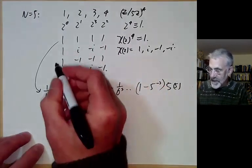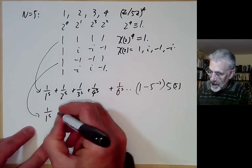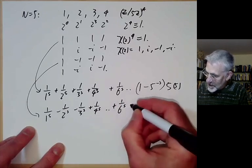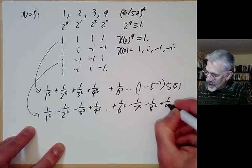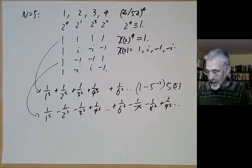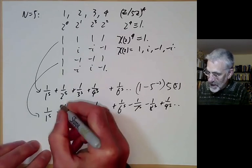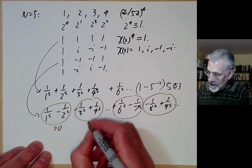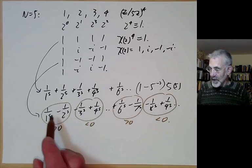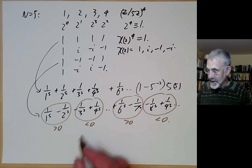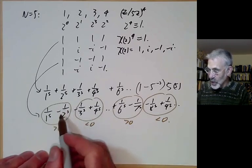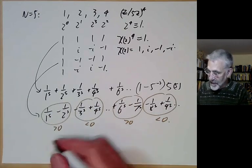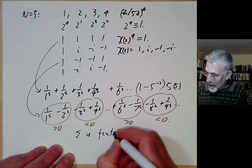For n equals 5, the first L-series is 1 over 1 to the s plus 1 over 2 to the s plus 1 over 3 to the s plus 1 over 4 to the s, skipping 1 over 5 to the s, then plus 1 over 6 to the s, and so on — this is 1 minus 5 to the minus s times zeta(s), not really new. For the character 1, minus 1, minus 1, 1, we get 1 over 1 to the s minus 1 over 2 to the s minus 1 over 3 to the s plus 1 over 4 to the s, then minus 1 over 6 to the s, and so on. Arranging terms in pairs, this is an alternating series of terms decreasing in absolute value, so it converges to something finite and non-zero.